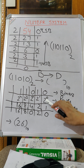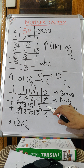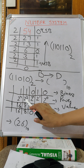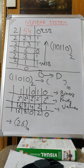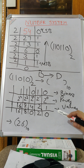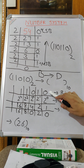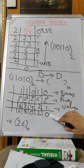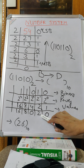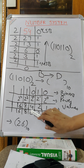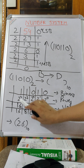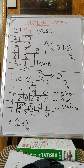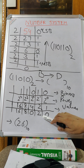Then we write the values: any number raised to power 0 is 1; 2 raised to power 1 is 2; 2 raised to power 2 is 4; 2 raised to power 3 is 8; 2 raised to power 4 is 16. Now we multiply each binary digit by its value: 1 × 1 = 1 ... wait — 0 × 1 = 0; 1 × 2 = 2; 0 × 4 = 0; 1 × 8 = 8; 1 × 16 = 16. Now we add all these numbers.